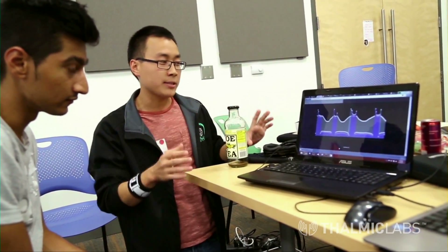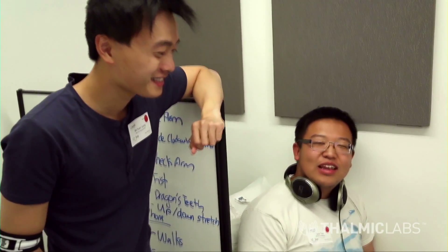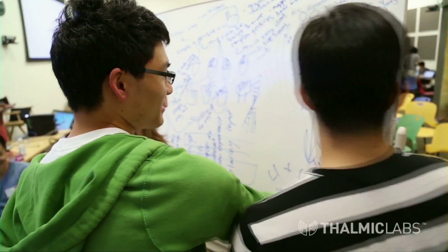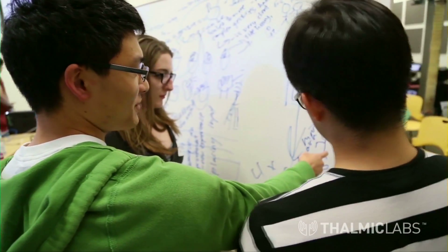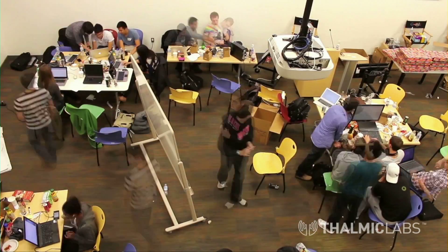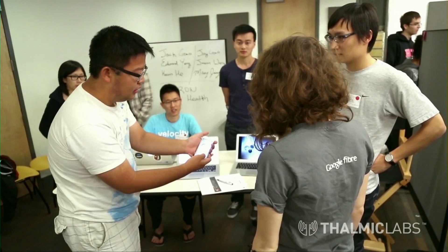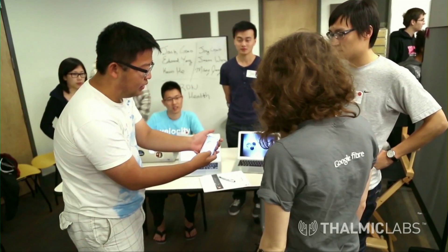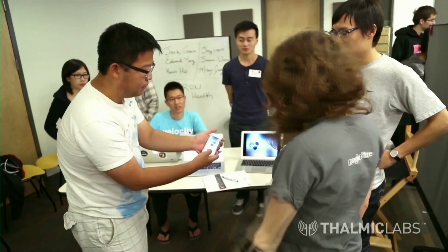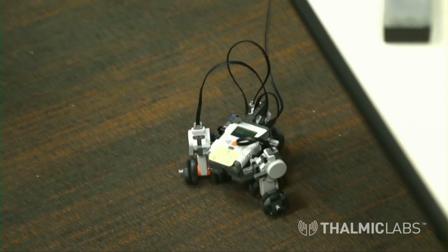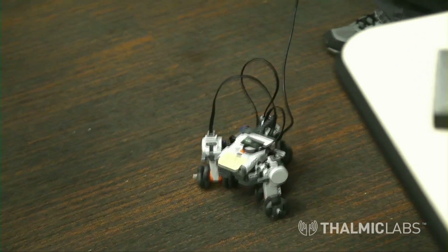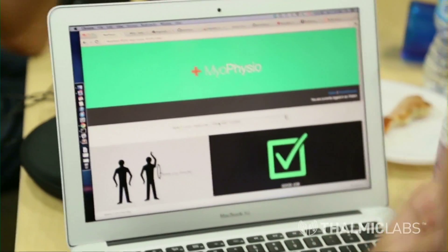Hackathon participants described their projects: creating a new and better mouse with the Myo, using the Myo during exercise to save data to a JSON file and predict tremors by calculating average angular velocity. We can also see Myo Studio web in action.